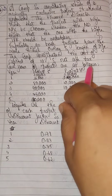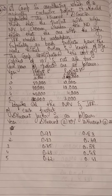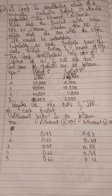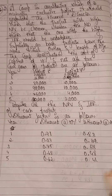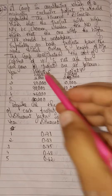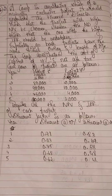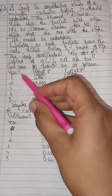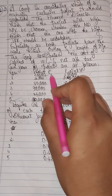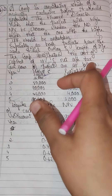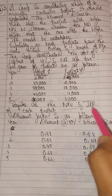Both projects have the same initial outlay and length of life. The company anticipates a cost of capital of 10%, and the net after-tax cash flows of the projects are given. We need to calculate NPV and IRR for each project to decide. Project X and Project Y both have an initial investment of 2 lakh rupees, over 5 years.